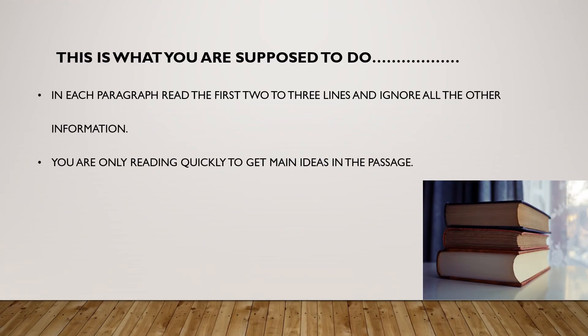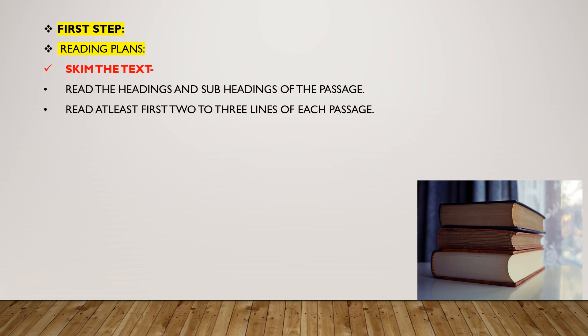So in each paragraph, read the first two or three lines and ignore the rest for now. You are only reading quickly to get the main ideas. That is Step 1: skim the text by reading headings, subheadings, and the first two or three lines of each paragraph.